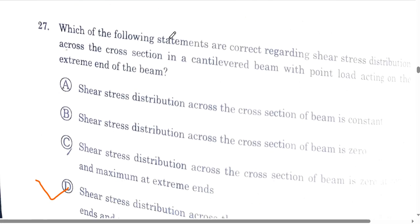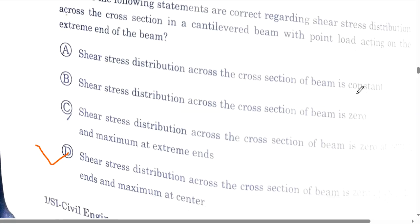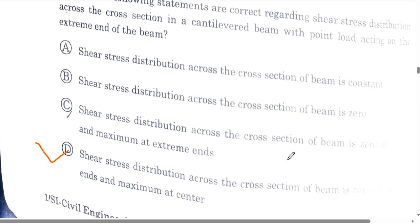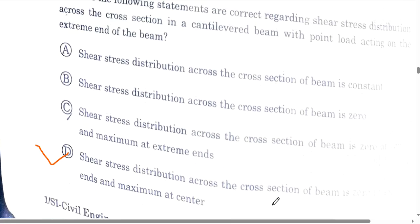Question number 27: which of the following statements are correct regarding the shear stress distribution across the cross section in a cantilever beam with point load acting on the extreme end? The first statement says shear stress distribution is constant. The second statement says shear stress distribution is zero. The shear stress is zero at the extreme end and maximum at the center. Option D is the correct answer.